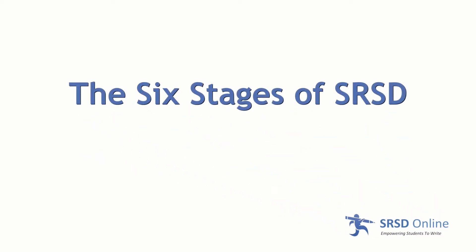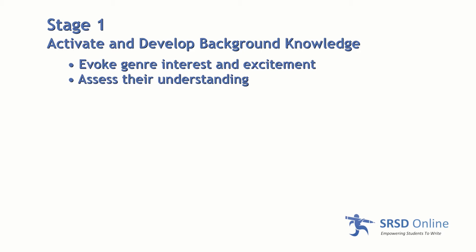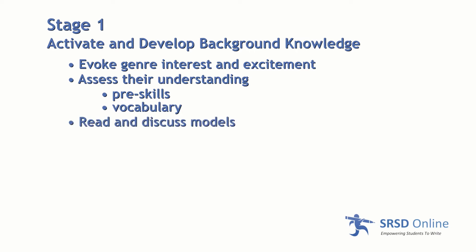Now we're going to talk specifically about each stage. The first one is activate and develop background knowledge. It includes getting students interested about that genre. It's important that they connect that genre to their life. We also want to know what they know about this genre, whether they have the pre-skills to begin and the vocabulary necessary to proceed. We are also going to read and discuss models during this stage to activate what they already know and fill in those gaps.